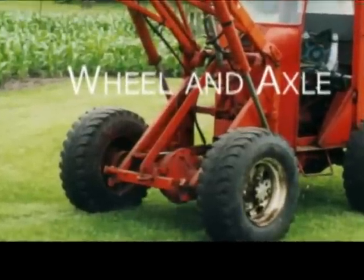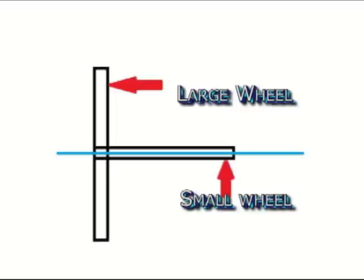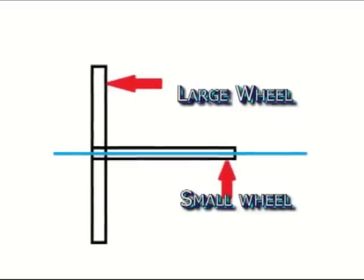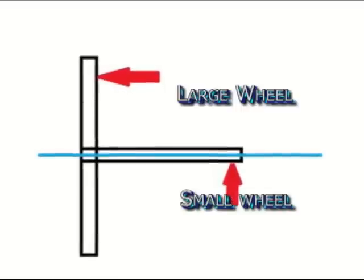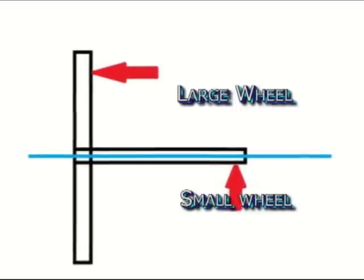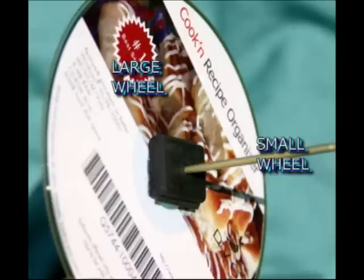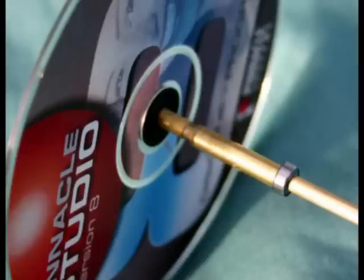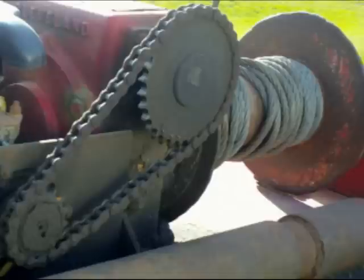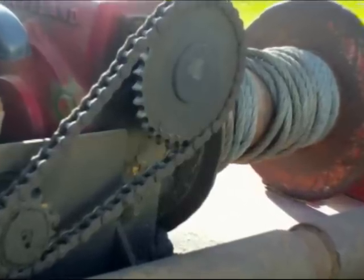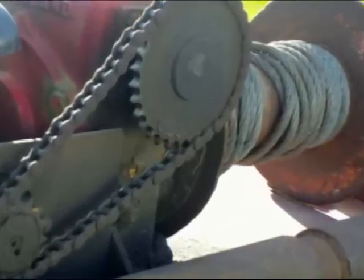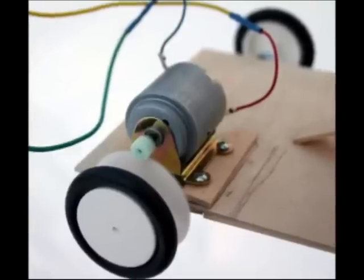The wheel and axle consists of a larger wheel and a smaller wheel that are connected through the same axis. When torque is applied to one of the wheels, there is a mechanical advantage applied to the other wheel, like with the lever. This torque can be applied through a connecting chain, a cable, a belt, or the wheels could be meshing gears.